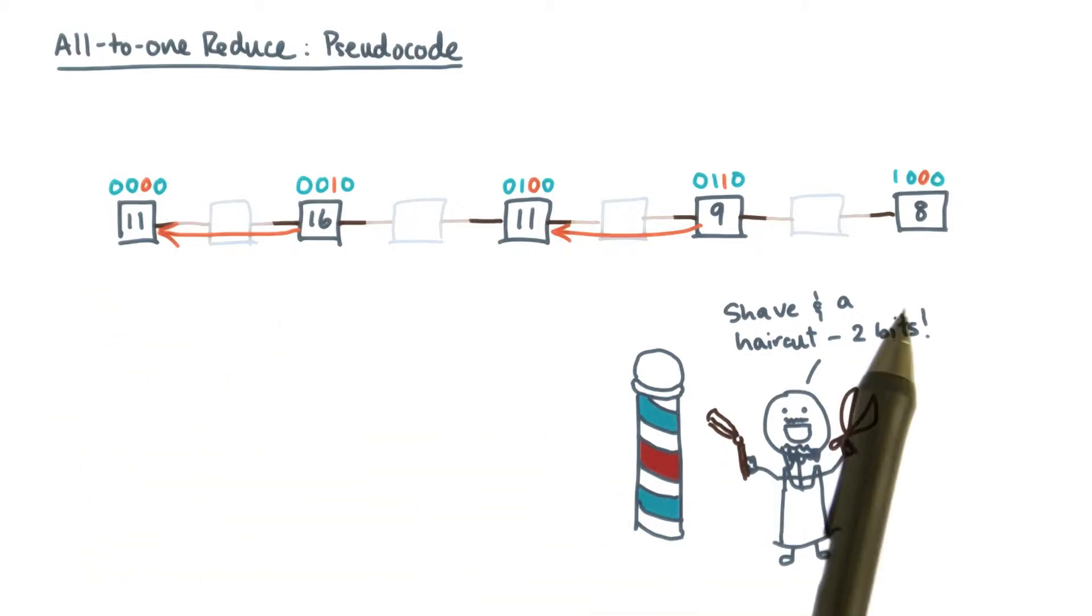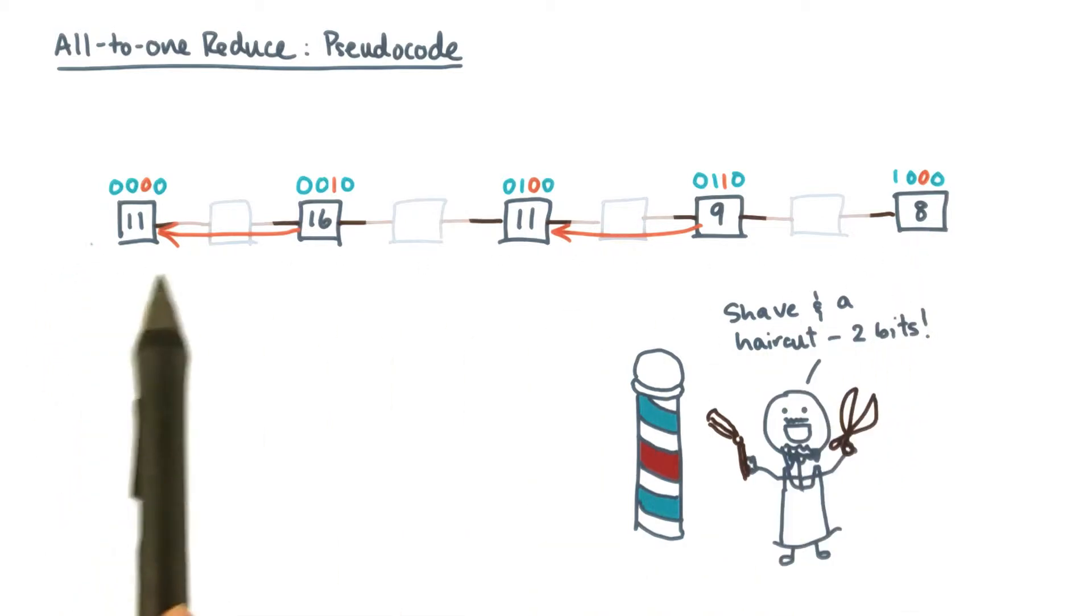There are p processes. Each process has a value, and we want to compute, say, the global sum of these values, leaving the result on some root process, let's say process zero.